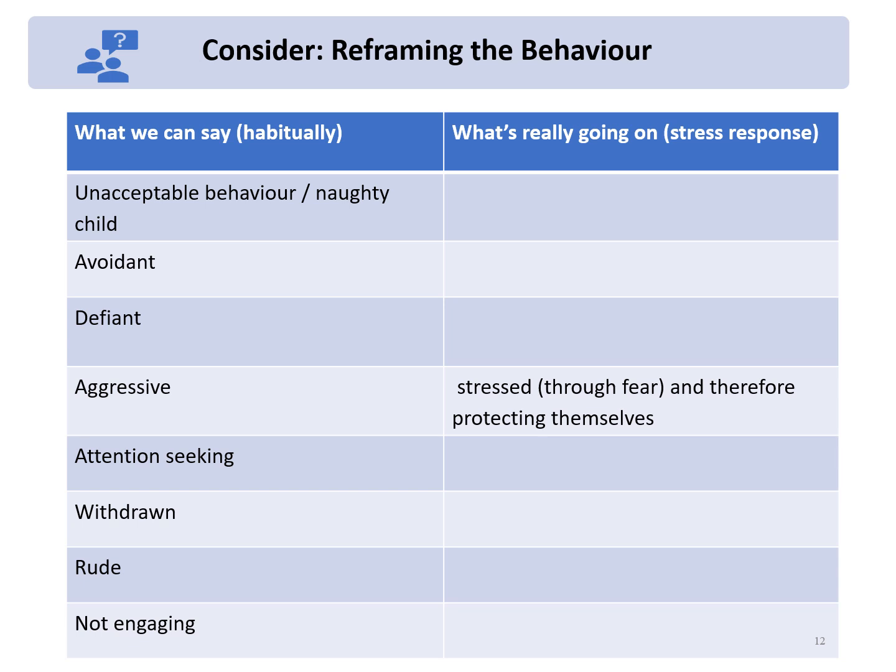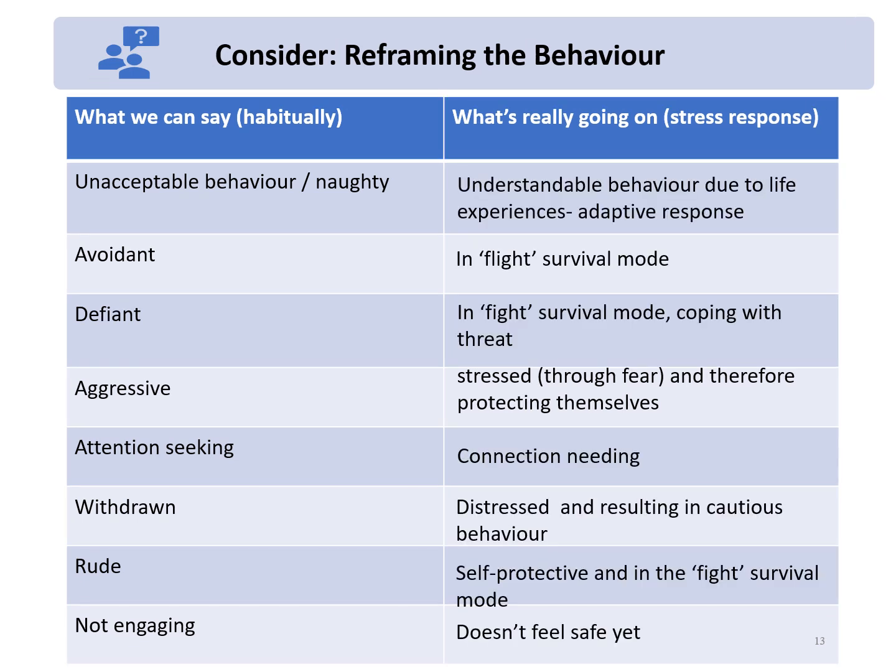To reframe the behaviour: is it misbehaviour, or is it a stress behaviour? By thinking of it as a stress behaviour, we are more inclined to seek solutions and find out the cause of the stress rather than merely providing a punishment. Now we understand that the stress response is protective, innate and fast-active. Unacceptable behaviour or a 'naughty child' is better understood as understandable behaviour due to life experiences — an adaptive response.